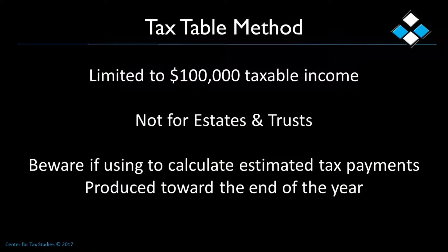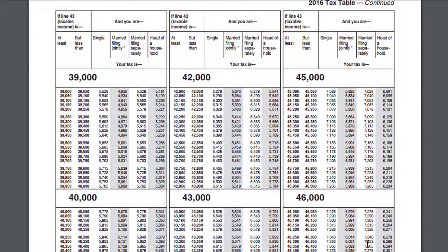There are two methods you can use. The first is the tax table method. You are limited in using the tax table method if you make over $100,000 — the tax tables just don't calculate tax beyond that. Also, you can't use these tables if you are in a state or a trust. As you can see here, it takes the amount of income that you have and calculates the tax for you, providing you with a neat amount.